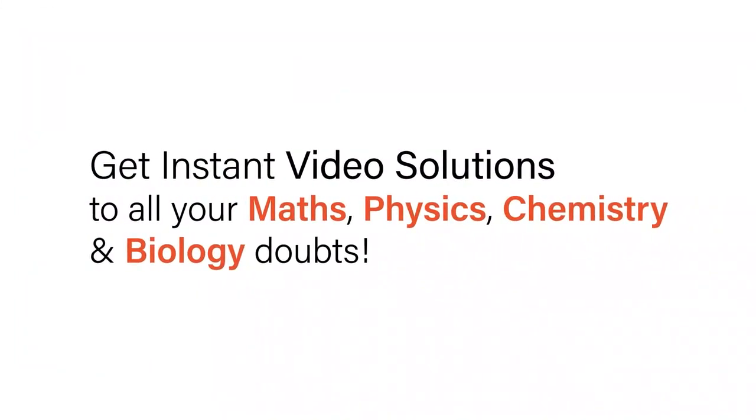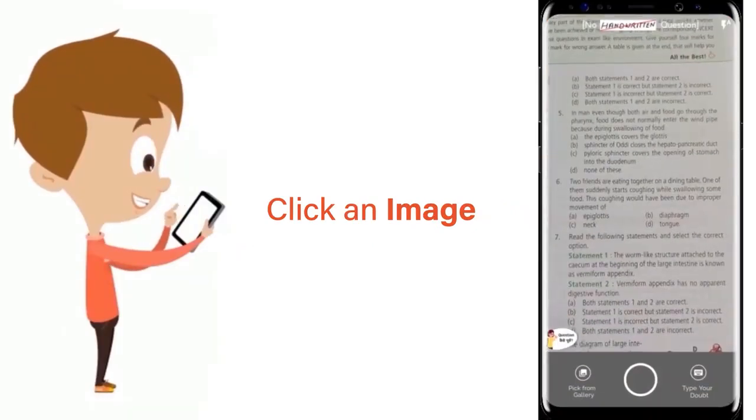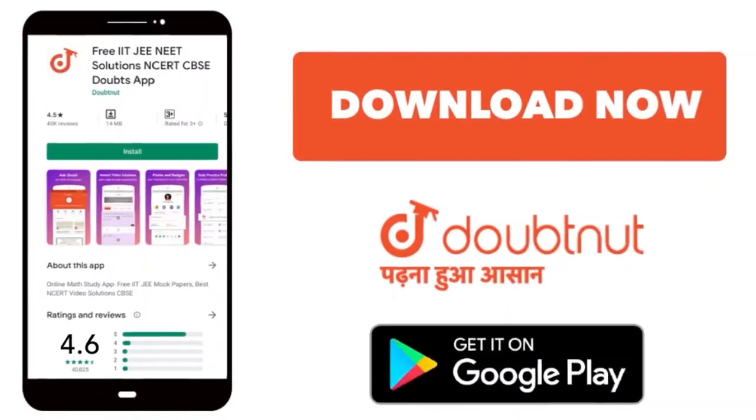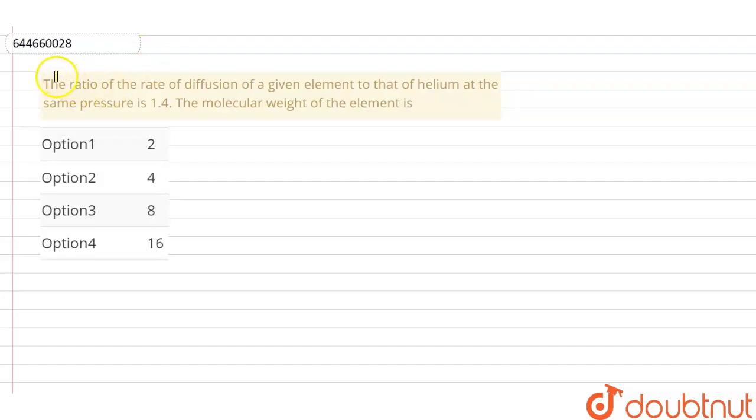With Doubtnet, get instant video solutions to all your maths, physics, chemistry, and biology doubts. Just click the image of the question, crop the question, and get instant video solution. Download Doubtnet app today. The question is: the ratio of the rate of diffusion of a given element to that of helium at the same pressure is 1.4. The molecular weight of the element is 2, 4, 8, or 16.